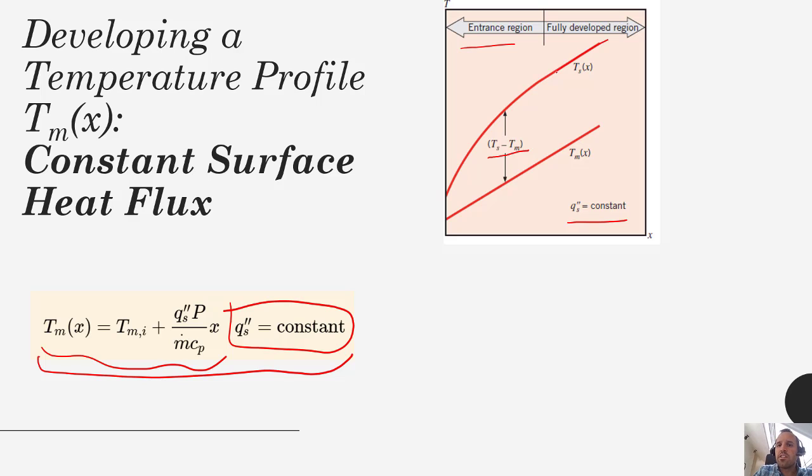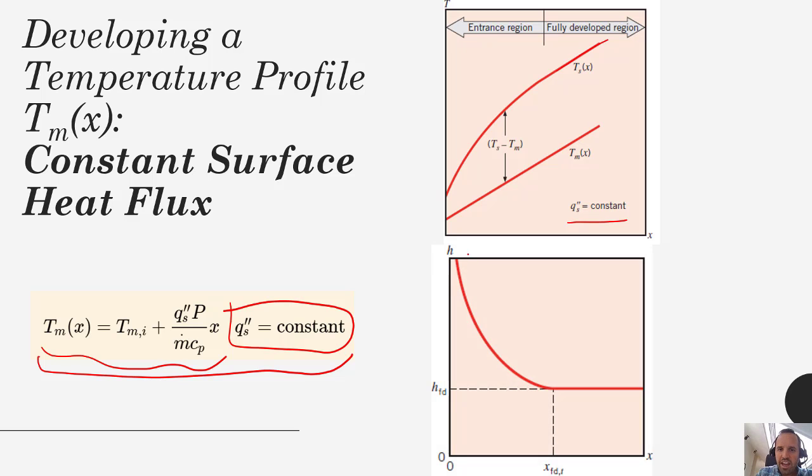So your surface temperature changes, but you may see that there is less of a driving force needed here at the entry region, less of a temperature driving force needed to maintain that same surface flux. That's because the boundary layer is thinner in the entrance region.